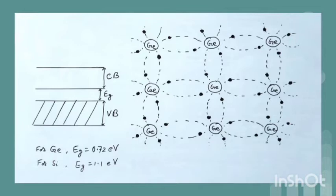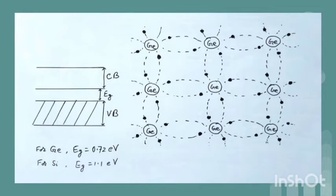Hence at zero Kelvin the semiconductor behaves as an insulator. The minimum energy required by an electron to break the covalent bond and overcome the forbidden gap to shift to conduction band is 0.72 electron volt for germanium and 1.1 electron volt for silicon. Electrons acquire this energy even at room temperature and therefore the semiconductor acquires some conductivity at room temperature.